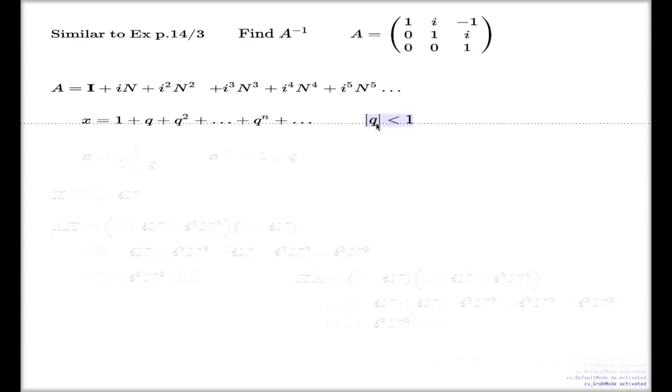If q in absolute value is less than one (otherwise the sum will not converge), if you sum these powers of q, you know how to compute x. That's the geometric progression formula. Meaning that if you're wondering what will be the inverse of x, that will be the inverse of x, isn't it?